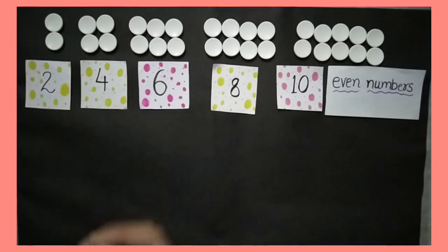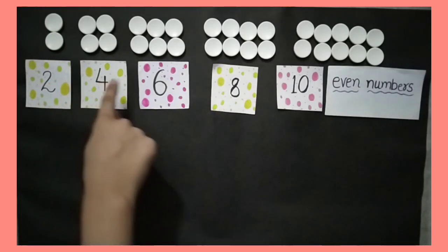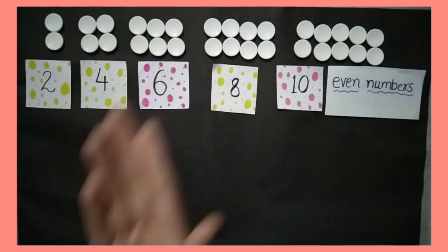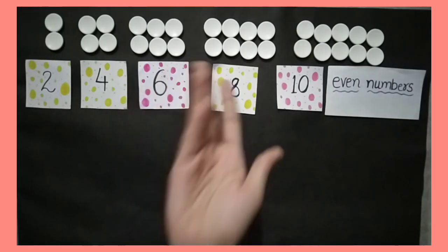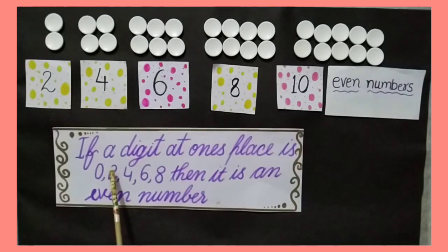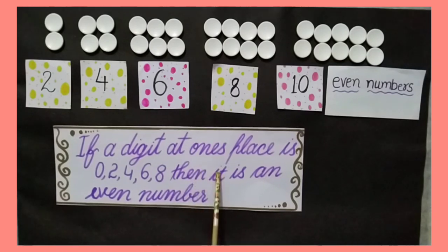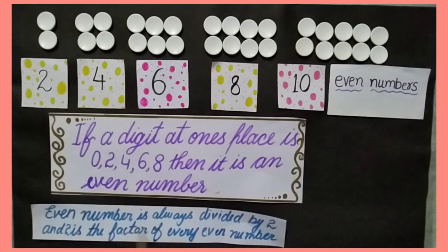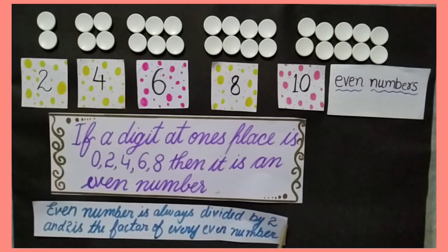Till now we have learned that numbers 2, 4, 6, 8 and 10 are even numbers because pairs are successfully made. It does not matter how large the number is — if the digit at the ones place is 0, 2, 4, 6, or 8, then it is an even number. In even numbers all pairs are made and no digit is left behind, so an even number is always divisible by 2, and 2 is a factor of every even number.